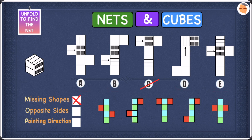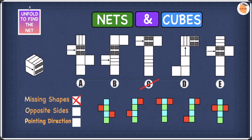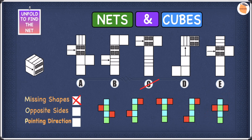We can leave D and move on to E. In E none of them are opposite — we have the stripy pattern, the window, and the arrow, and they're all on different colors, so we cannot eliminate anything. We're left with A, B, D, and E. Let's put a tick next to opposite sides and move on to pointing directions.